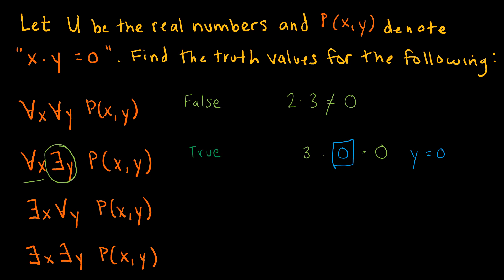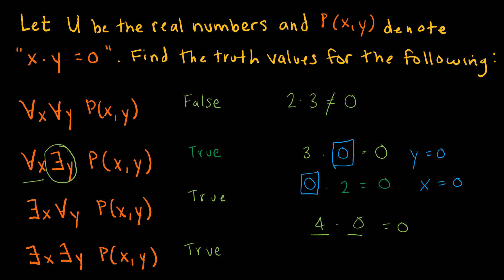The next one: there exists some x such that for all y, x times y equals 0. Is there one value I can plug in for x such that any y I choose gives 0? Yes — if x equals 0, then it doesn't matter what y is, the product will be 0. So this is true. And for the last one: there exists some real number x and there exists some real number y such that x times y equals 0. This is also true — we just need one of them to be 0. For example, x equals 4 and y equals 0 gives 4 times 0 equals 0.